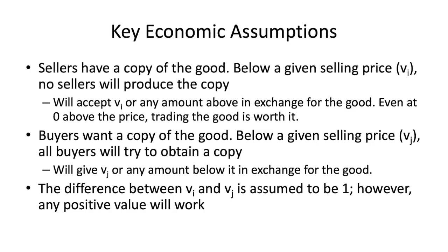If the price is too low the seller is just going to hold on to it, or the seller is not even going to bother to produce anything. On the buyer side it's the same old buyer from economics. Buyers want a copy of the good below a certain price — that's the demand curve. There's also a reserve price. The assumption in this chapter for both buyers and sellers is that the selling price and the buyer's reserve price are both one price for all. Under conditions of competition with lots of buyers and lots of sellers, that assumption is valid.